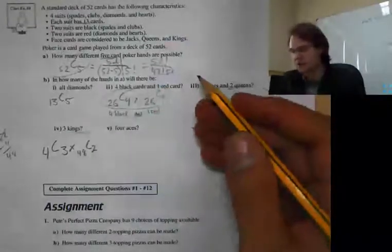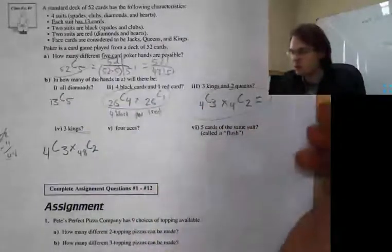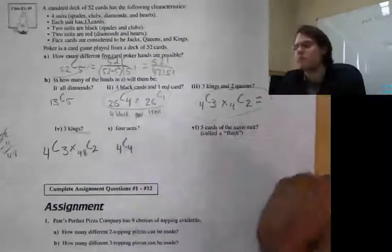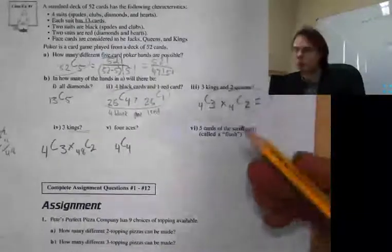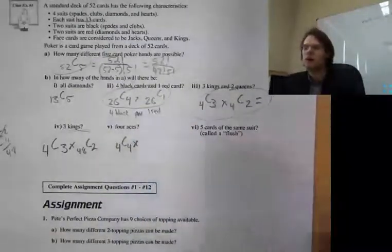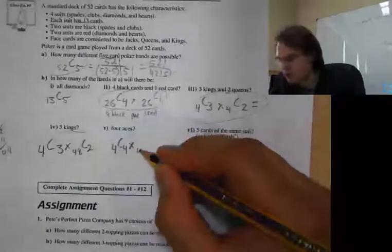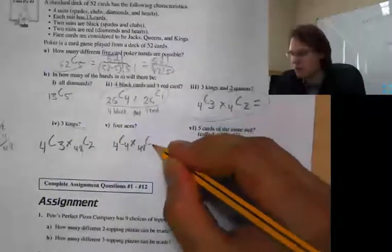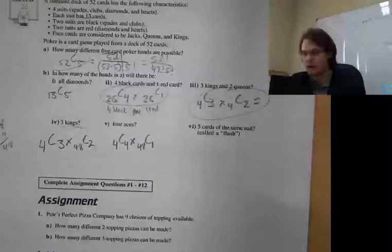For 4 aces: 4 choose 4 equals 1 — there's only one way to get all 4 aces. The rest can't be an ace, so we have 48 cards to choose 1 from. So it's 4 choose 4 multiplied by 48 choose 1. Multiply those together for the answer.